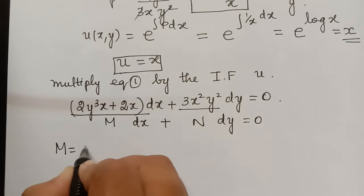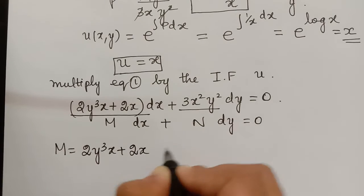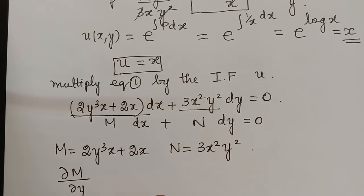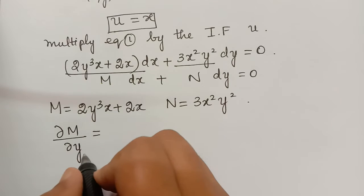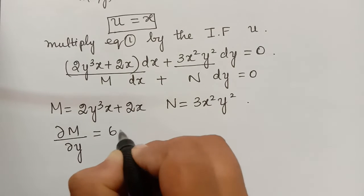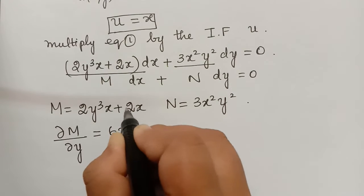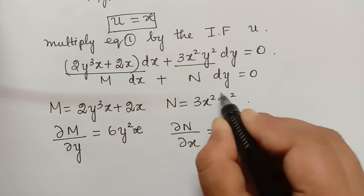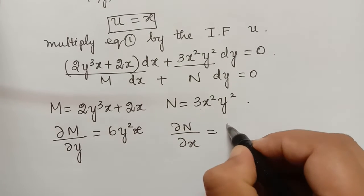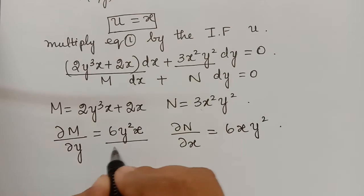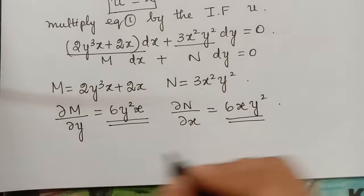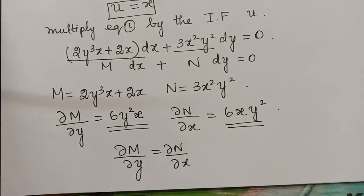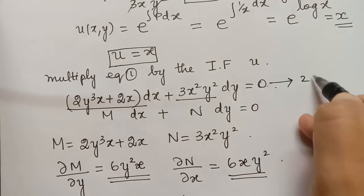This equation is of the form M dx + N dy = 0, where M = 2xy³ + 2x and N = 3x²y². Finding ∂M/∂y gives 6xy², and differentiating N partially with respect to x gives 6xy². We observe that ∂M/∂y = ∂N/∂x, so the transformed equation (equation 2) is exact.